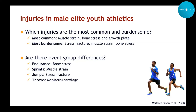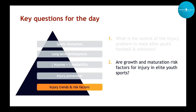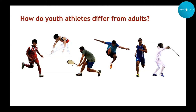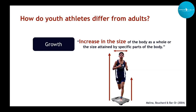We now have a better understanding of the extent of the problem. We'll jump to our second question: are growth and maturation risk factors for injury in elite youth sports? It's important to understand how youth athletes differ from adults. One aspect is growth — when we talk about growth in research and practice, we're talking about an increase in size, either of the full body or a specific body part. We can measure body mass, stature, leg length, and breadth, and track changes in those measures.